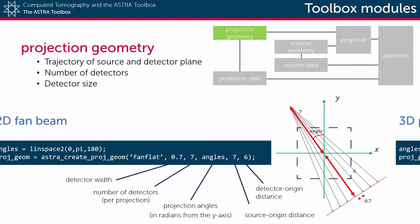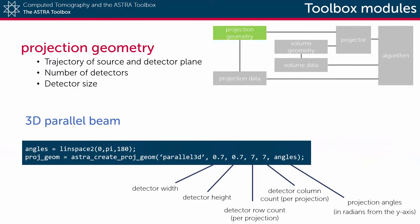A three-dimensional parallel beam geometry is very similar to a two-dimensional parallel beam geometry, but next to the width of a detector you also have to specify its height, and the size of the detector array is specified by its number of columns and its number of rows.